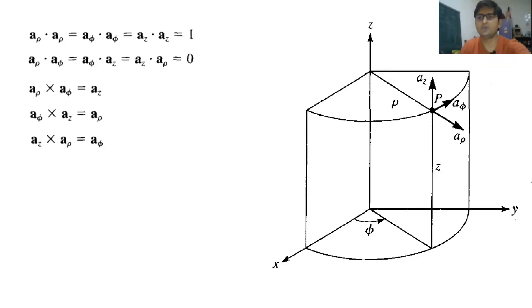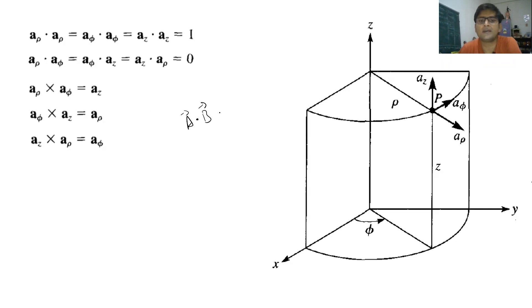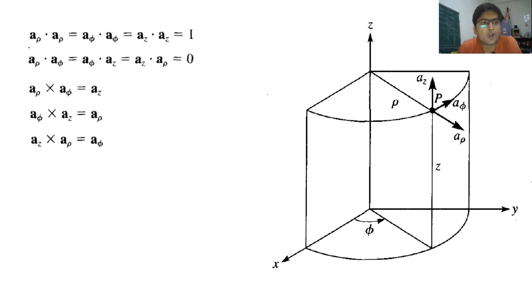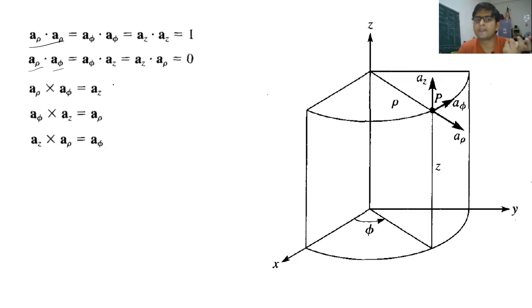Since the three unit vectors a_rho, a_phi, and a_z are orthogonal — that is, perpendicular to each other — their dot product with themselves equals one, because the angle between the same vectors is zero, giving cos(0) = 1. The dot product between two different orthogonal unit vectors is zero, because the angle between them is 90 degrees and cos(90°) = 0.